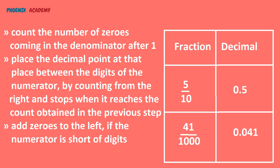41/1000 — the number of zeros in the denominator are 3, so the number of decimal places are 3. We need to place the decimal point at that position between the digits of the numerator. Here the numerator is 41, so we are short of digits and can add zeros to the left. Therefore, the decimal becomes 0.041.